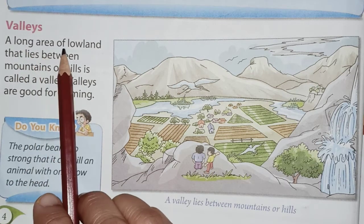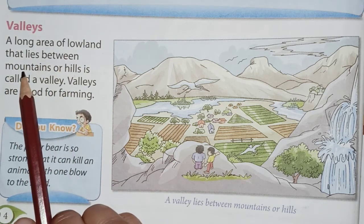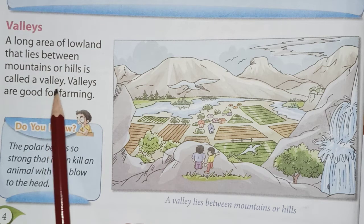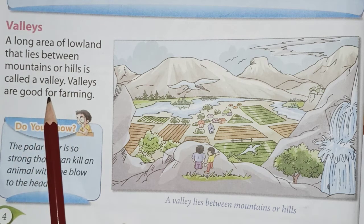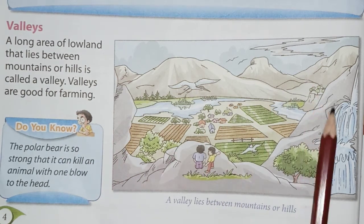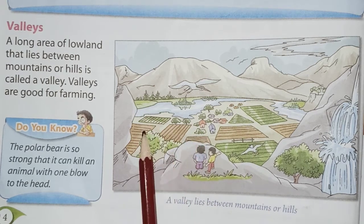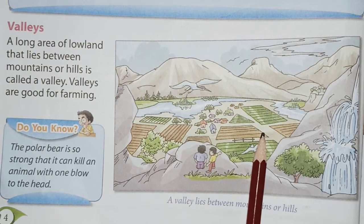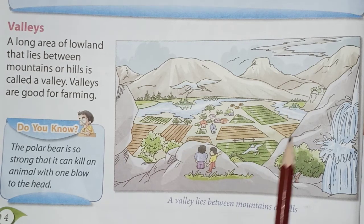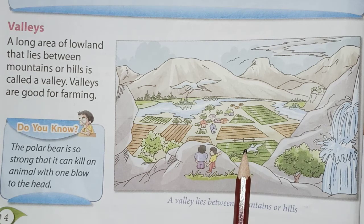A long area of low land that lies between mountains or hills is called a valley. Valleys are good for farming. You can see mountains or hills all around and the land between them — you can get water easily in this area, so this land is very suitable for farming and human settlement.